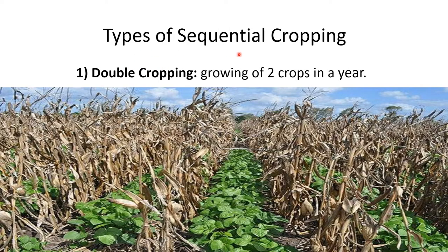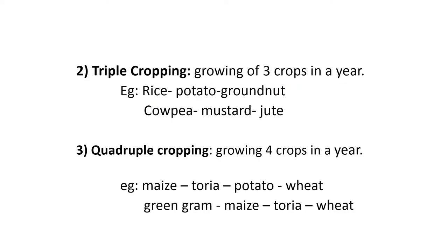There are four types of sequential cropping. The first one is double cropping — growing two crops in a year. Example is cowpea and bajra, or it could be green gram and jowar. The second one is triple cropping — growing three crops in a year. An example is rice, potato, groundnut, or cowpea, mustard, and jute.